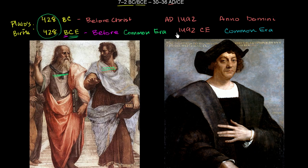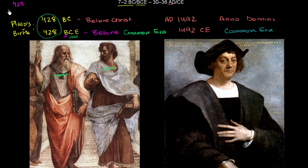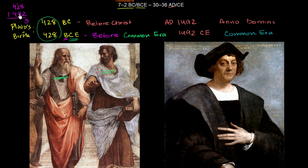If you wanted to figure out how many years passed between Plato's birth and Columbus sailing across the Atlantic to find the New World, you would say it took 428 years to go from Plato's birth to the theoretical birth of Christ, and then another 1492 years to wait until Columbus gets his ship together. So the total is 428 plus 1492: 8 plus 2 is 10, 1 plus 2 plus 9 is 12, then 9, 1 plus 4 plus 4 — so 1920 years between Plato's birth and Columbus sailing across the Atlantic.